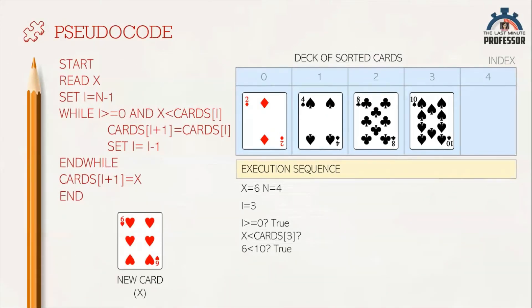And is x less than cards[i]? Is x less than cards[3]? Is the value of x, that is 6, less than 10? Yes, it is true. Therefore, the statements inside the while loop get executed.